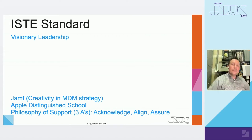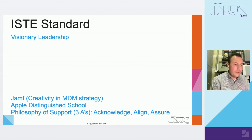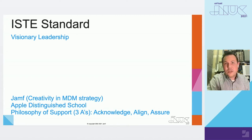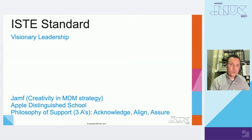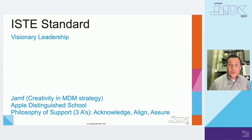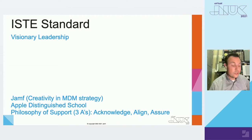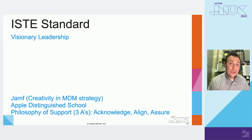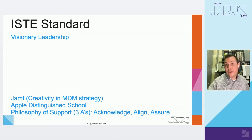I want to break this down using the ISTE standards for administrators. Looking at the first big category — visionary leadership — a lot of what the ISTE standards for leaders looks at is modeling. If you want students to have agency and choose how they demonstrate their learning, guess what you need to do with your teachers if you're an admin? Same thing — give them some agency over how they learn and how they demonstrate their learning.